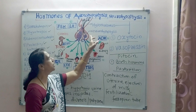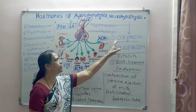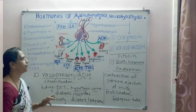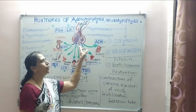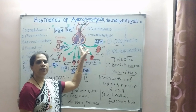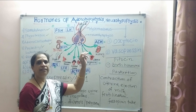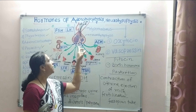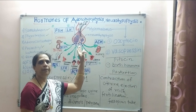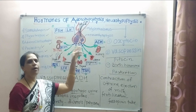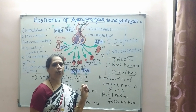So those are the two hormones secreted by the posterior pituitary or neurohypophysis: oxytocin and vasopressin. The pars intermedia secretes MSH — melanocyte stimulating hormone — which is non-functional in humans but in some lower vertebrates stimulates melanin pigment and causes skin pigmentation. This concludes the hormones of adenohypophysis and neurohypophysis.